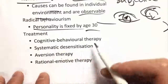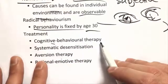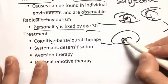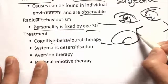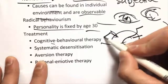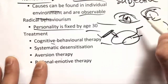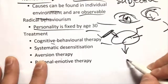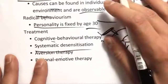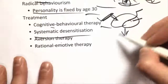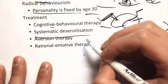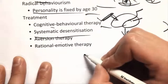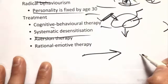Some treatments include Cognitive Behaviour Therapy, in which you get clients to change the way they perceive and think about situations to help with their problem. Systematic desensitization is when you present whatever the issue is slowly over time, so the response gradually lessens.